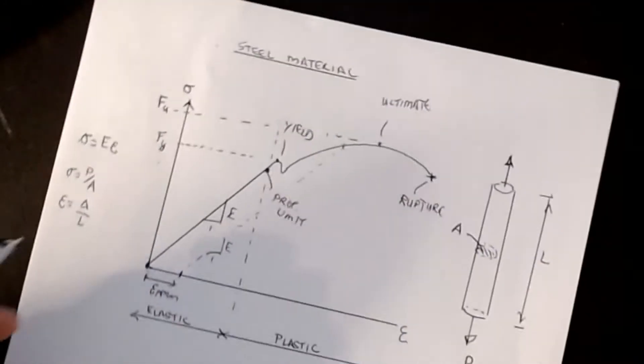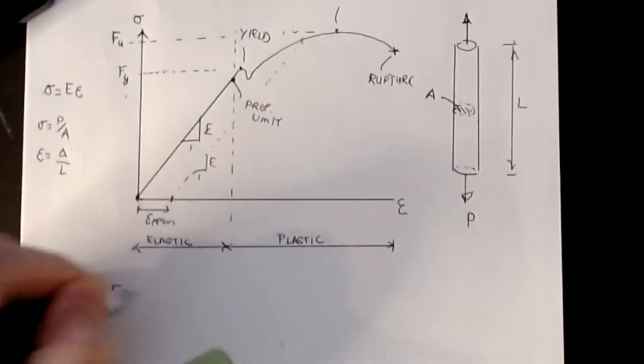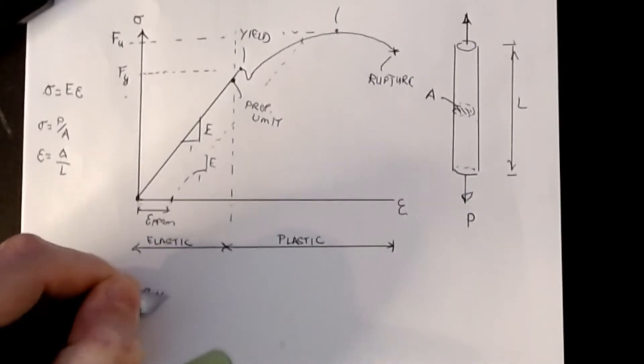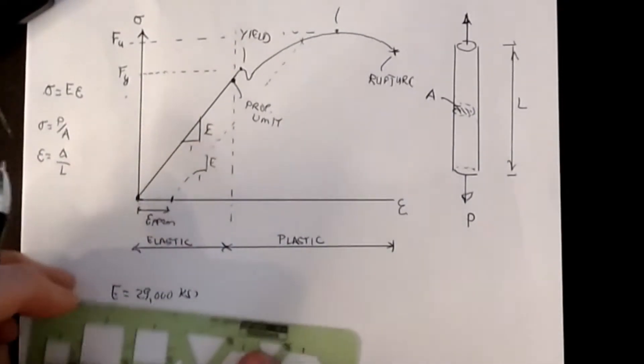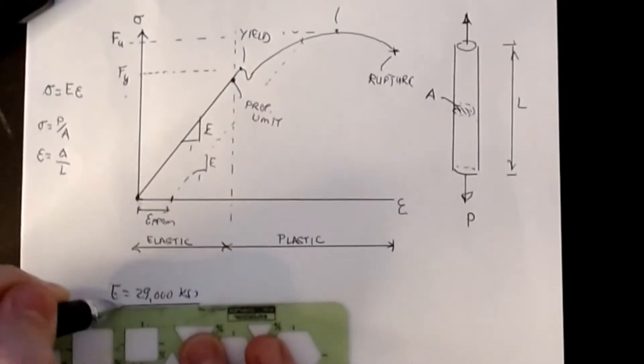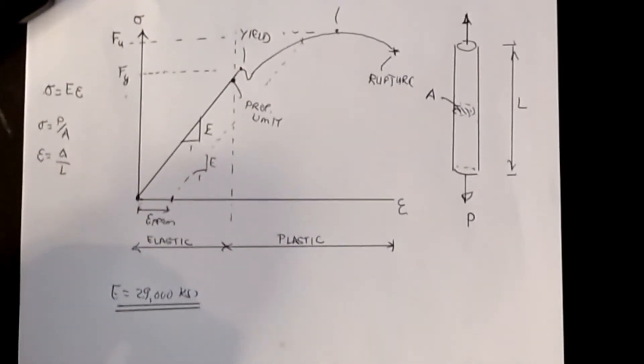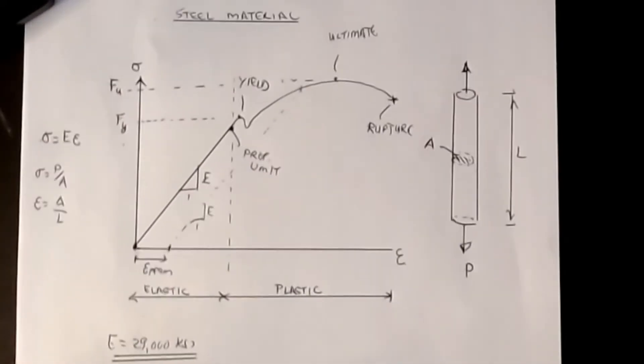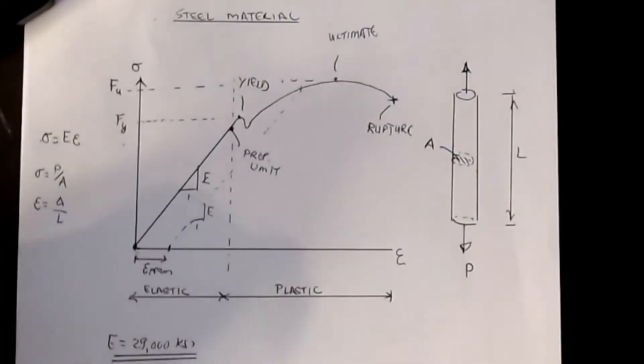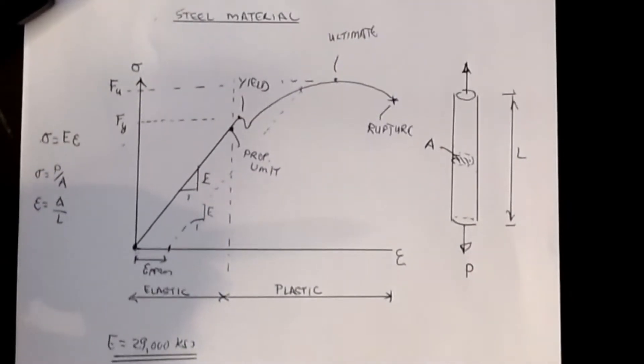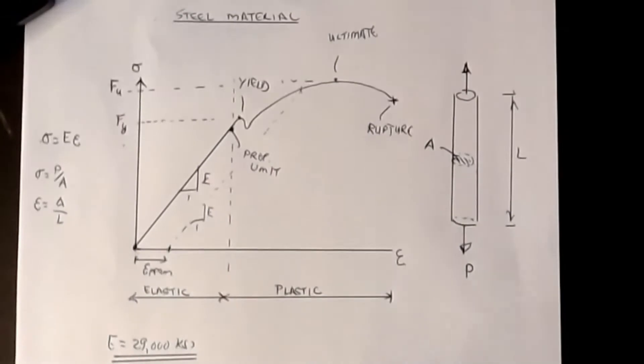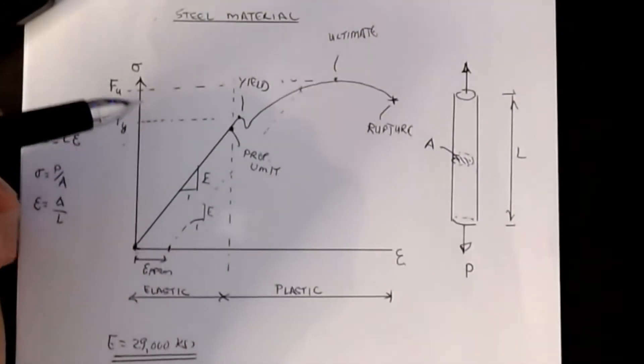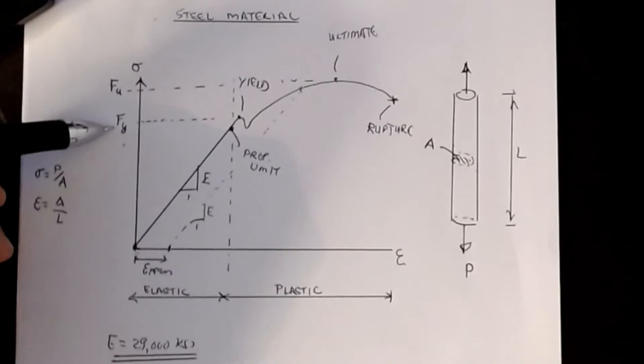For everything that we do in this class, we're going to be taking E as 29,000 KSI. Again this depends on the metal that you're using, it might be 31 or 28, but for our purposes this is the value that we're going to use going forward. We'll always use 29,000 for our E value for what we're doing here.